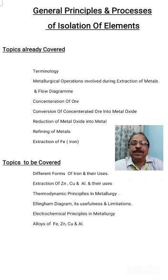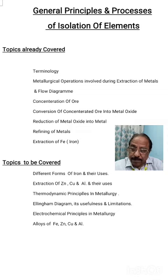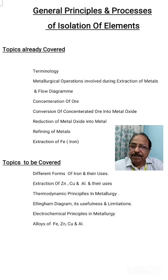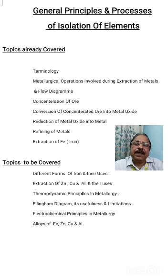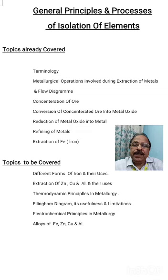We also have to discuss their uses and applications. Then we have to discuss the various thermodynamic principles involved in metallurgy, and then a very important topic — the Ellingham diagram, its usefulness and limitations. This is one of the most important topics in this metallurgical chapter. After that, we have to discuss how electrochemical principles are applicable in metallurgy. And finally, we have to learn about alloys of iron, zinc, copper, and aluminium. This is how we will finish our chapter.